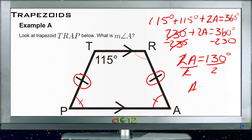So we divide both sides by two, and we get angle A is 65 degrees, and so is angle P. And we already notified this one, or identified this one, as 115 degrees, so now we have all the measurements of all four angles.